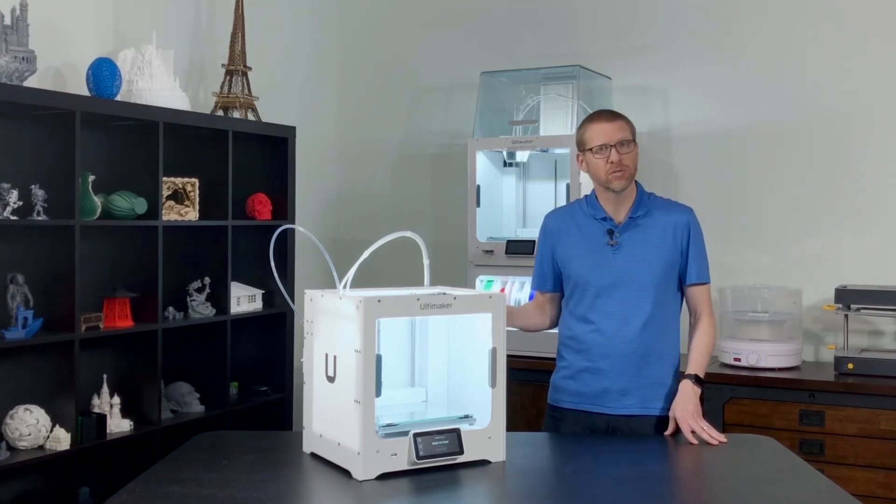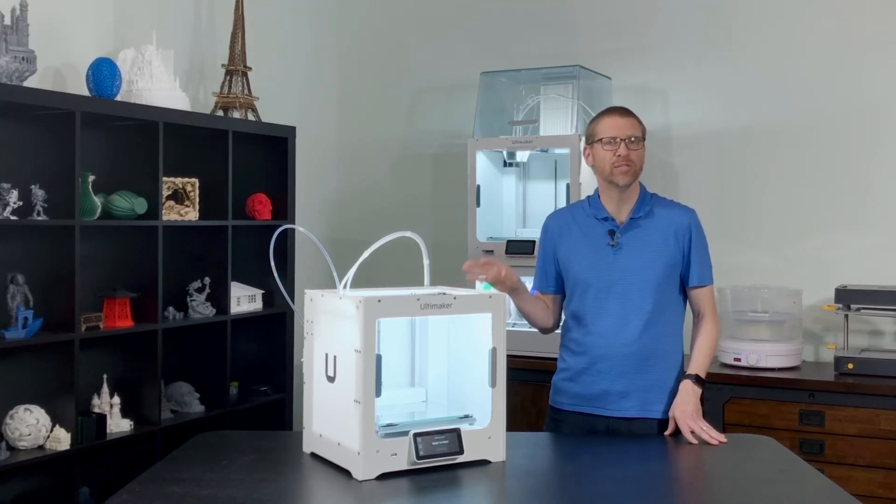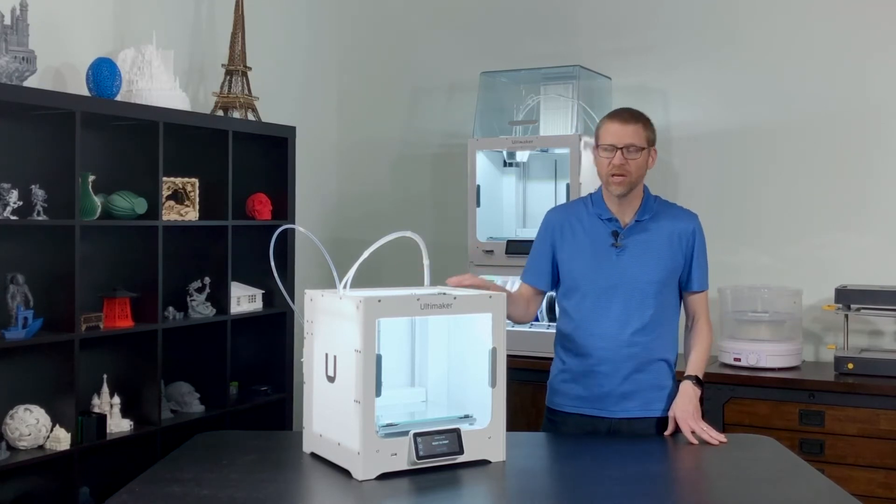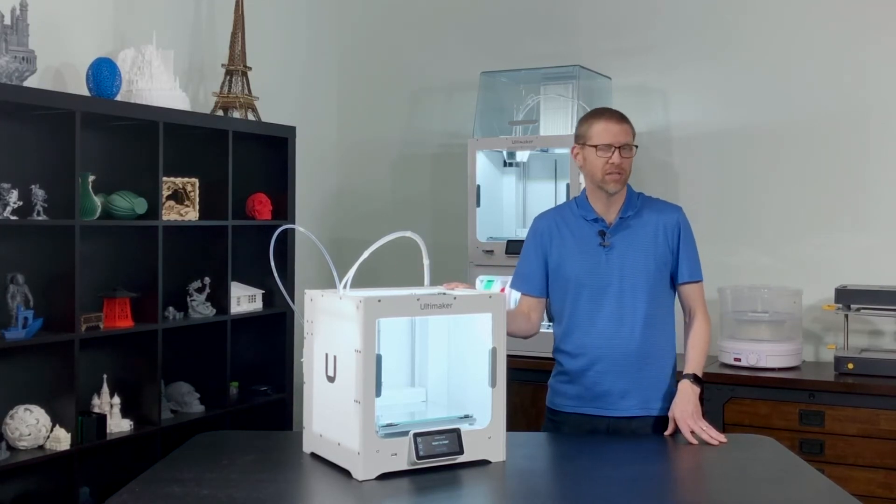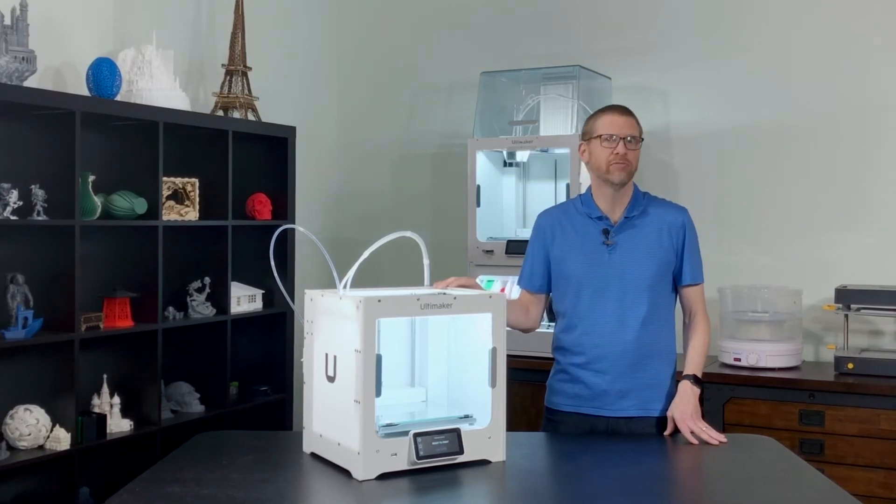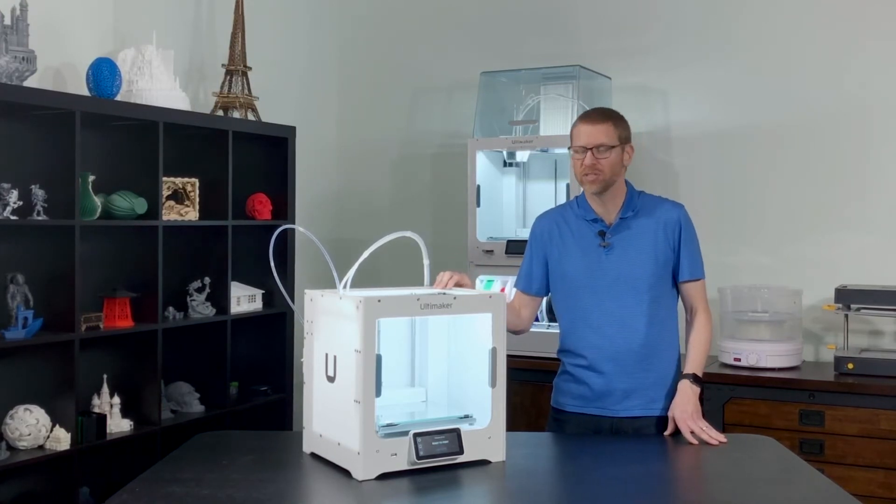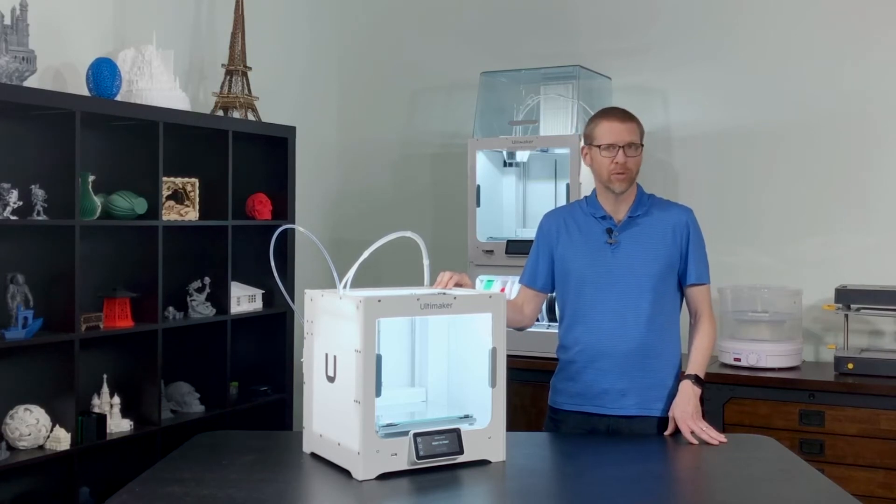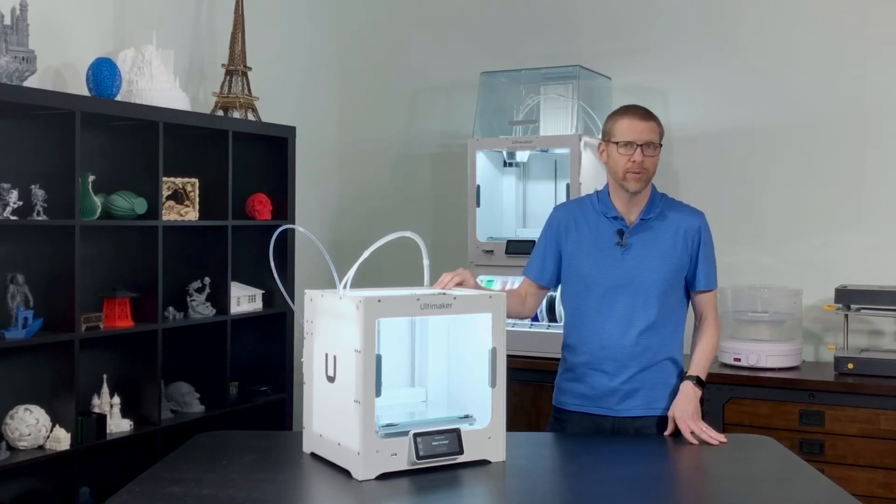These feeders also have hardened steel components, so you can now print with abrasive materials if you're using the optional CC print core, which has a hardened ruby nozzle. So you can print with things like carbon fiber reinforced materials or glass-filled materials that weren't possible before, or at least not recommended, on the Ultimaker 3.